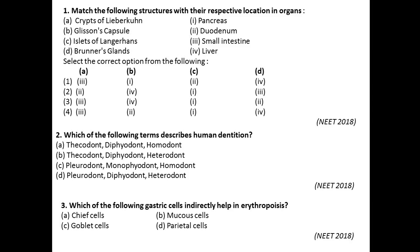Question number three: Which of the following gastric cells indirectly helps in erythropoiesis? Parietal cells are the answer, because parietal cells help in the production of HCl. This HCl converts Fe3+ into Fe2+. Along with this, parietal cells are also essential for the absorption of vitamin B12, that is cyanocobalamin. So HCl production leads to cyanocobalamin absorption and ferrous conversion, and these two moieties form erythrocytes. The answer is parietal cells.